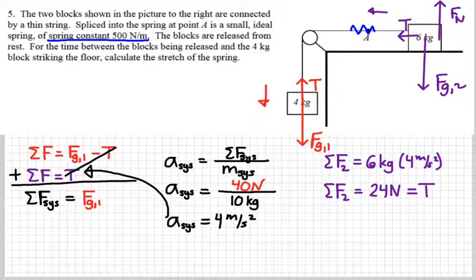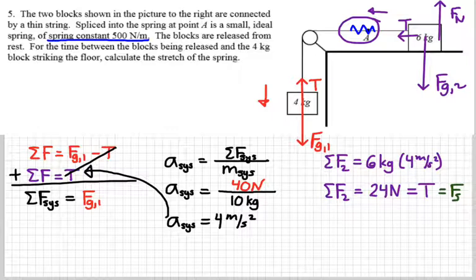And because the spring that we put in there is basically part of the spring, I now know that the force exerted by the spring is 24 Newtons. So throughout that whole string, the force has to be constant. It's got to be the same 24 Newtons.